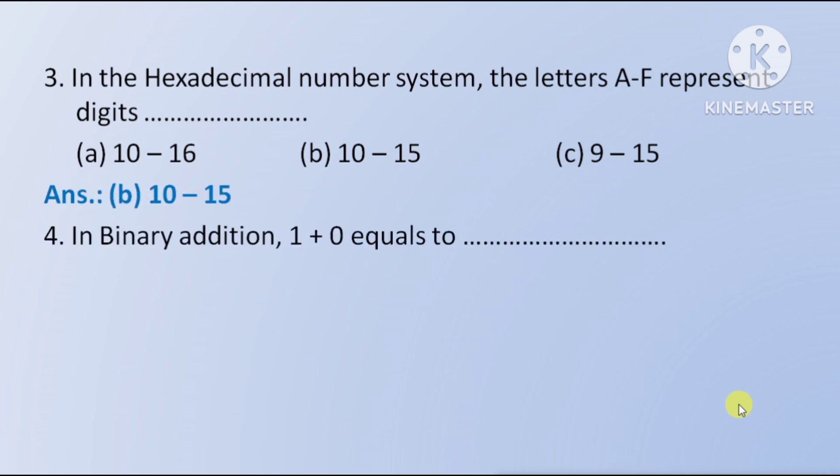Next question: in binary addition 1 plus 0 equals — option A 0, option B 1, option C 2. The right answer is option B, 1.